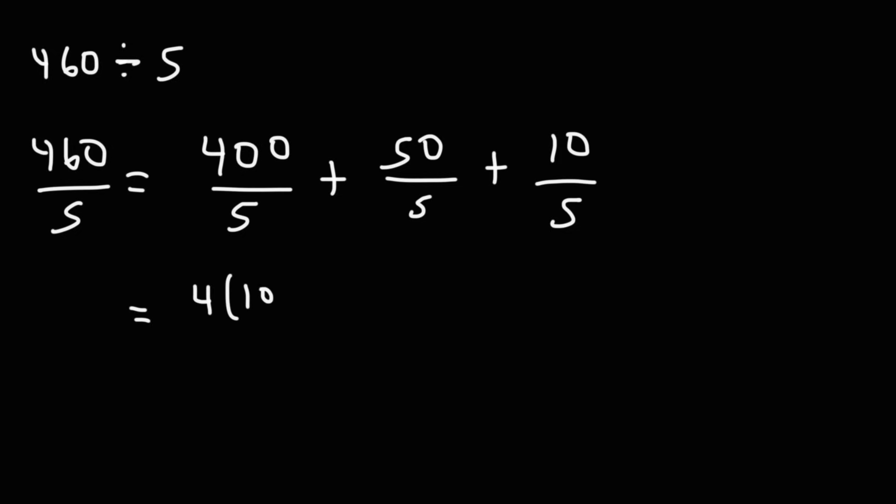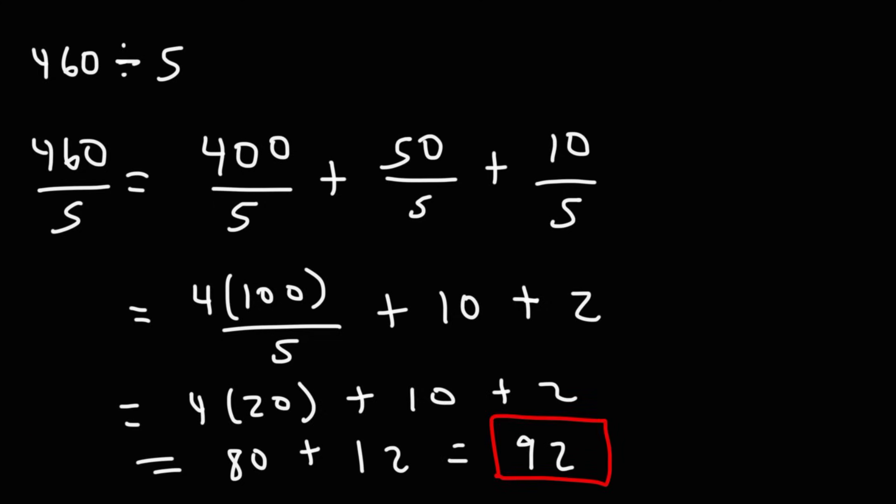Now, what about this one? What's 460 divided by 5? For this problem, I'm going to use 100 or multiples of 100. So 400 will be a nice number, and then 50 and 10. 400 plus 50 plus 10 is 460. Now, with 400 over 5, because that's a large number, I'm going to take out a 4. So this is 4 times 100 over 5. 50 divided by 5 we know is 10, 10 divided by 5 is 2. 100 divided by 5 is 20. And 4 twenties, if you have four $20 bills, you have 80 bucks. 80 and 10 plus 2 is 12. 80 plus 12 is 92. So that's 460 divided by 5, it's 92.